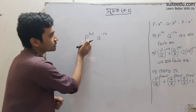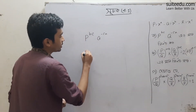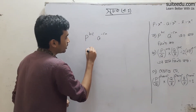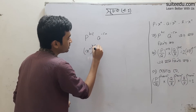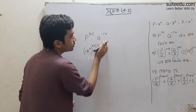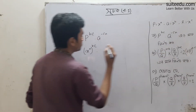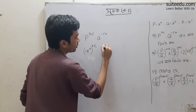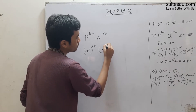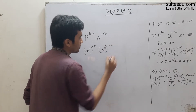Here we look at P to the power A — that is x to the power A, whole to the power BC — into Q, which is x to the power B, whole to the power minus CA.